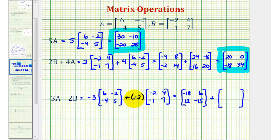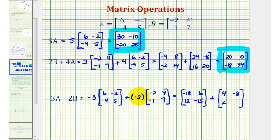For negative two times matrix B, we'll multiply each element by negative two. Negative two times negative two is positive four. Negative two times positive four is negative eight. Negative two times negative one is positive two. And negative two times positive seven is negative 14.